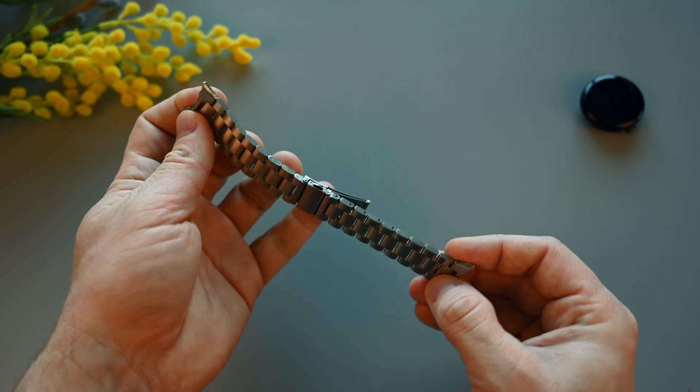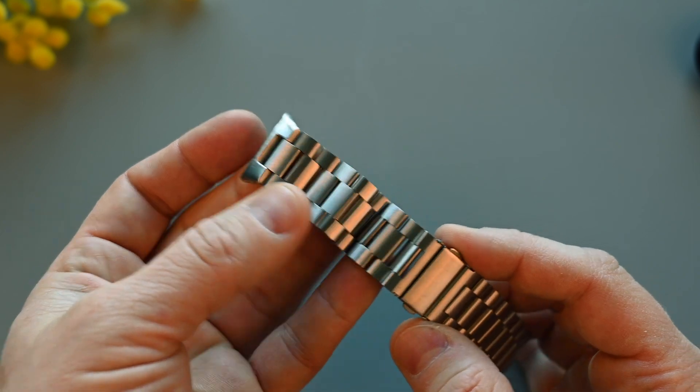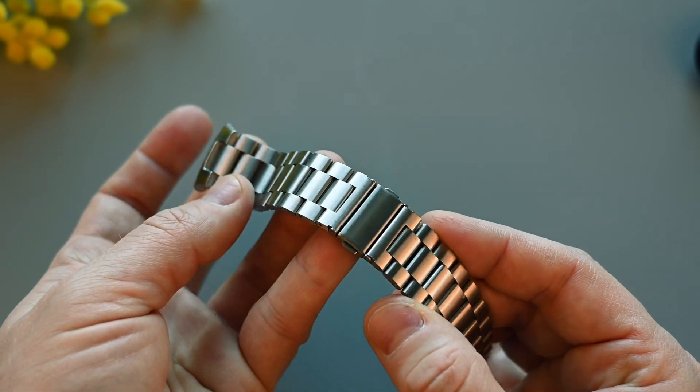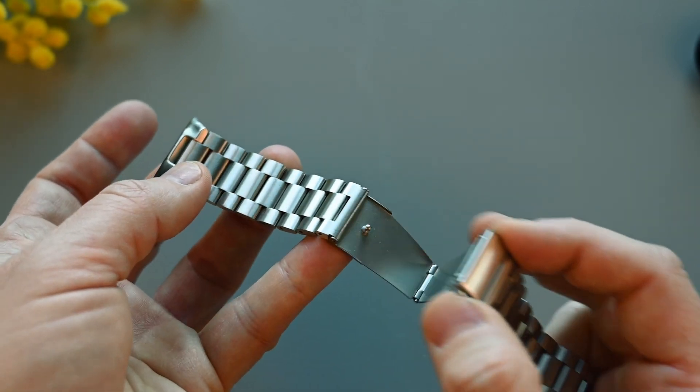The bands alone weigh about 82 grams, so the total weight with the watch is 112 grams. It's got a nice and simple clasp with buttons on the side, and one pin for securing it on the inside.